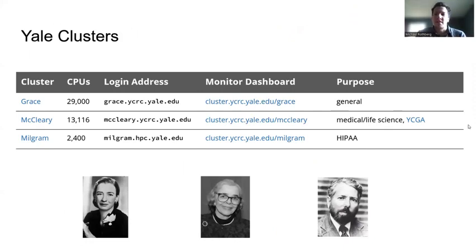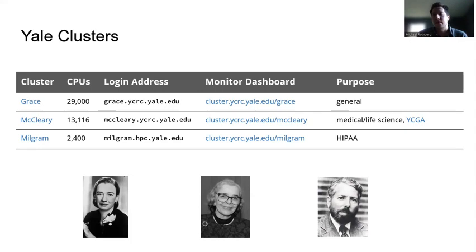At this moment we have three clusters. Our oldest is Grace with 29,000 CPUs, mainly for general use — traditional computer science, computer modeling, simulations like physics, along with new social sciences like psychology. McCleary is our most recent addition. Ruttle and Farnham have been discontinued and combined to create McCleary, a better and faster system with just over 13,000 CPUs, reserved mainly for medical life science and YCGA — the Yale Center for Genomics Analysis.